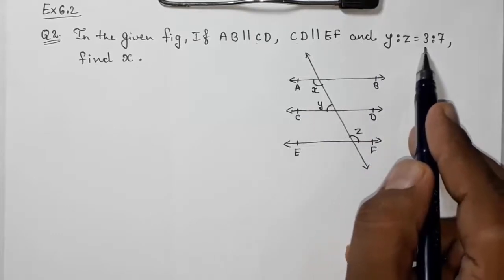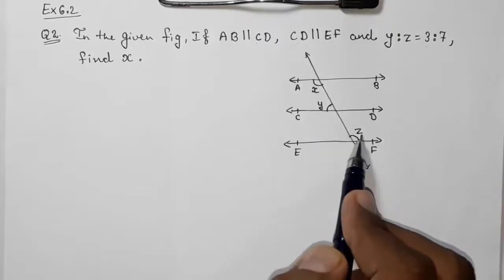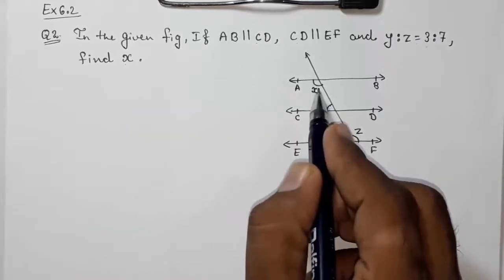The ratio of Y to Z is equal to 3 to 7, and we have to find out X.